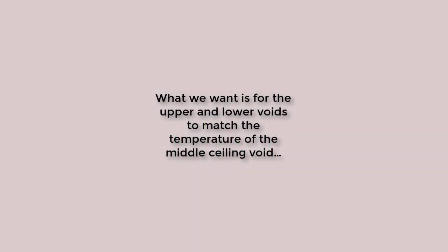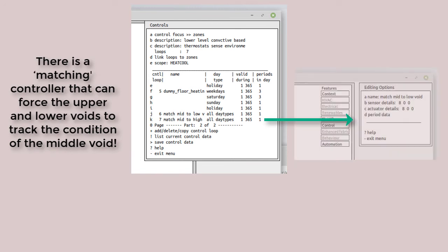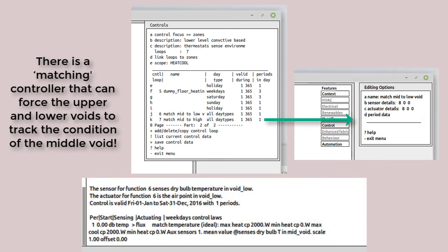The predictions would be more robust if the upper and lower ceiling voids were to track the temperature of the middle ceiling void. ESP offers a match temperature ideal control law, which enables this. Let's have a look.